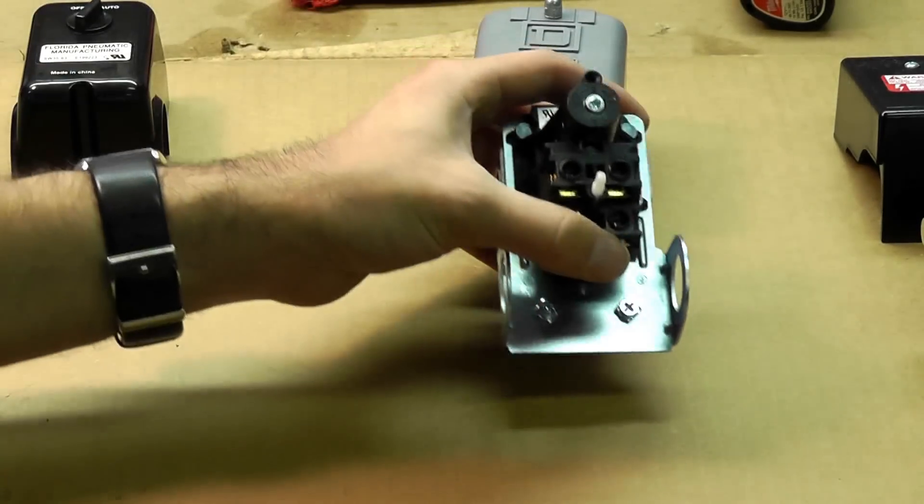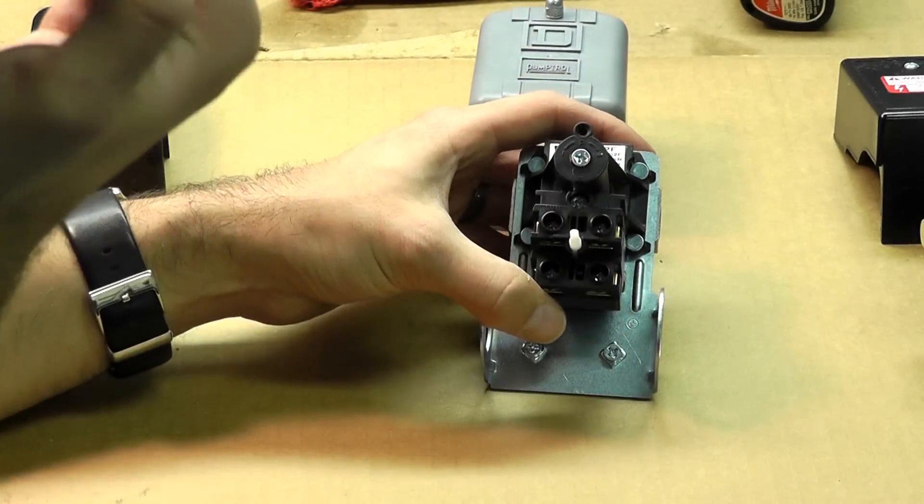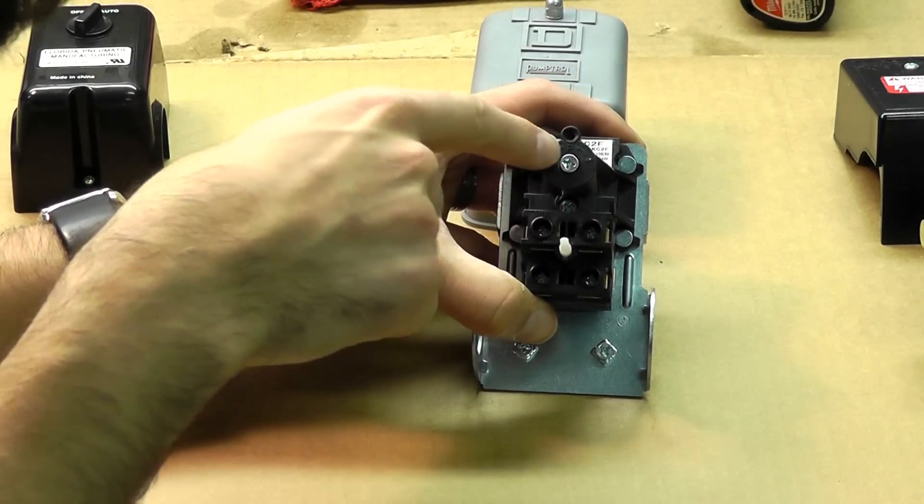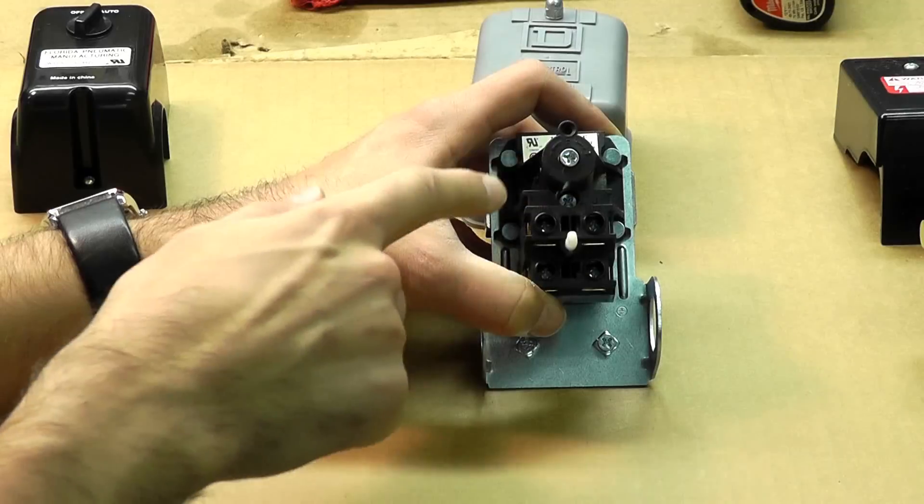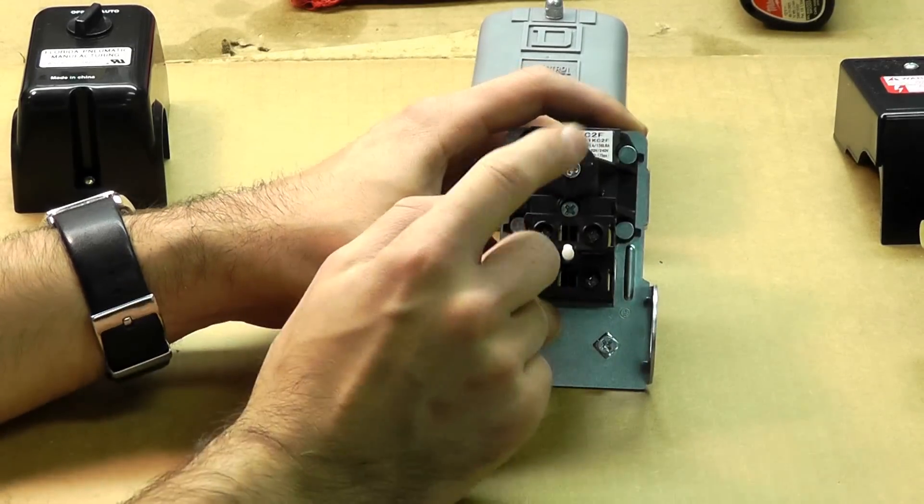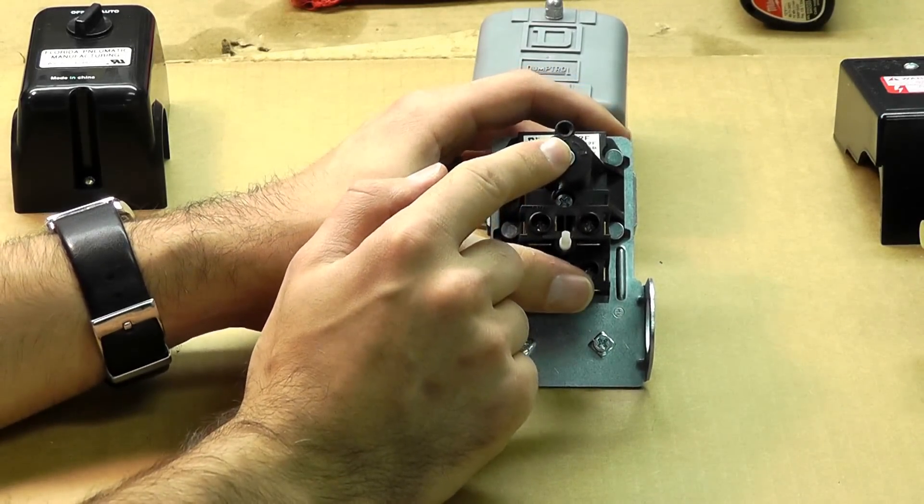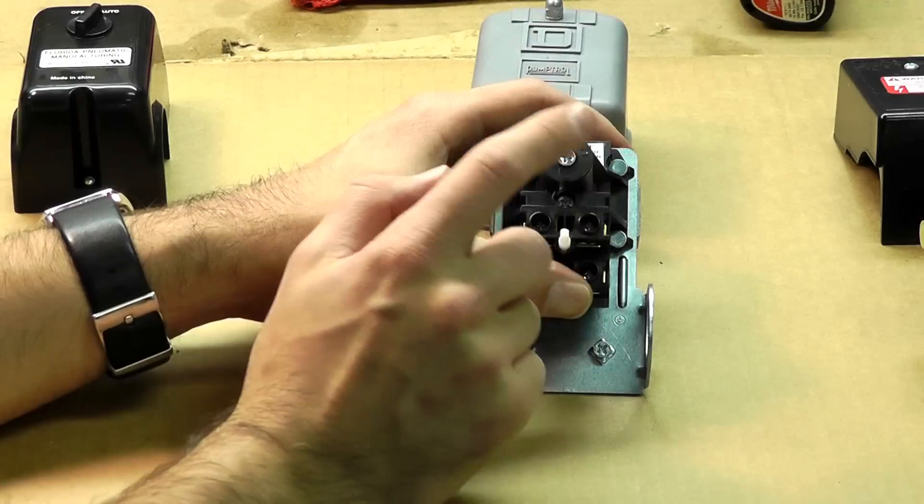And this is a Condor switch, a little bit different. It only has one adjustment. You'll notice this P here, which is pressure of course, and the arrow to the right with a plus and a minus on the left. This just increases the cut-in and cut-out pressure at the same time, simultaneously.